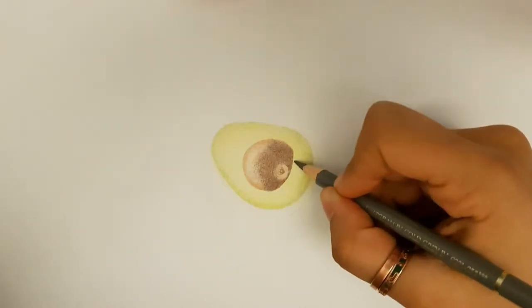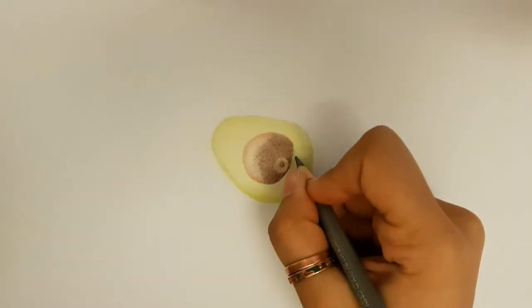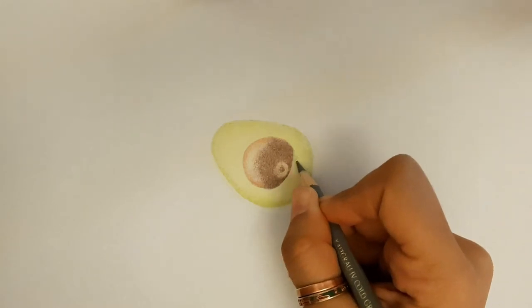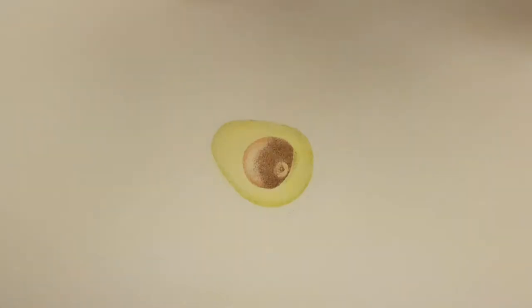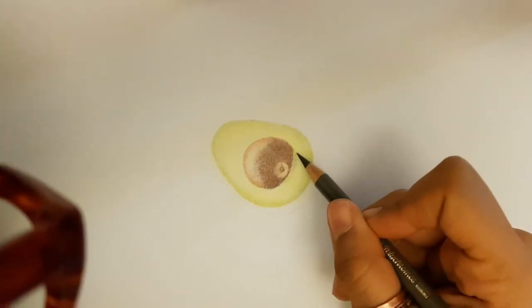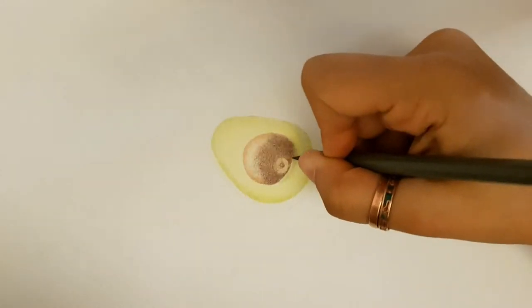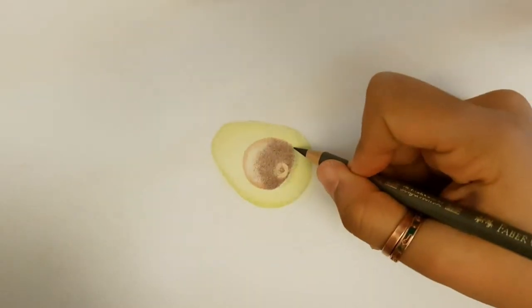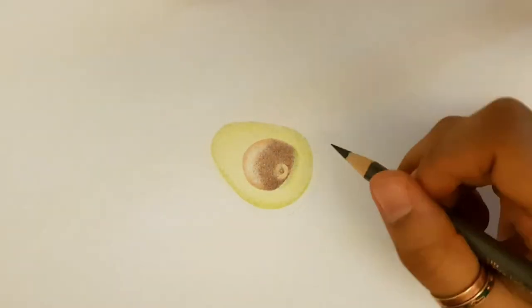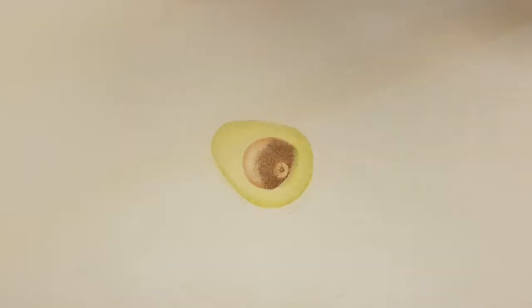To show the shadow of the seed, I'm using the cold grey, and I'm showing that the seed, because it's a little bit higher than the actual avocado, it's creating some shadow. And these details help for the realistic look.